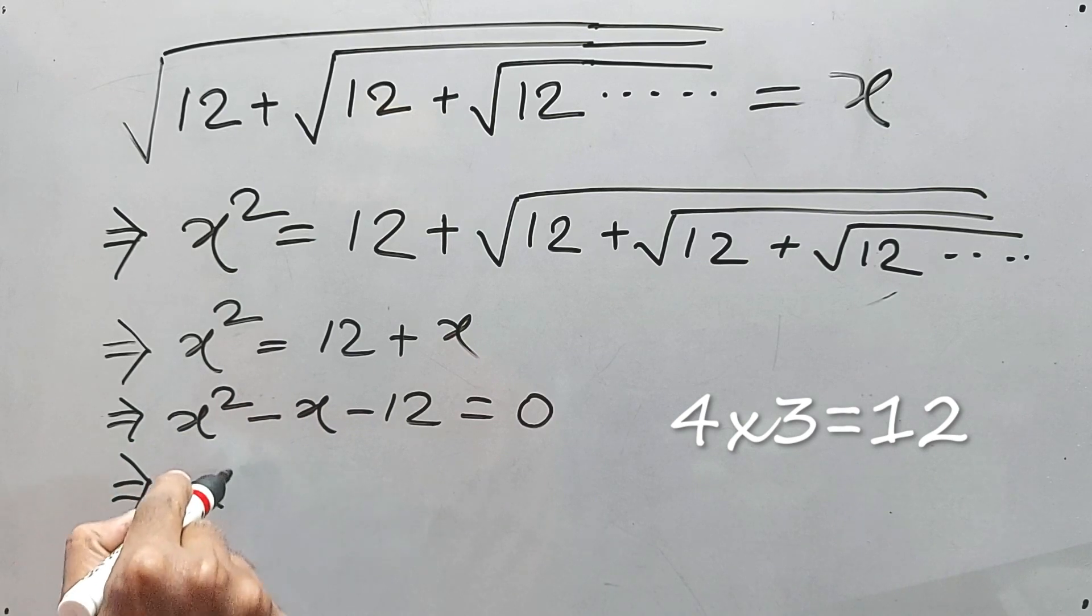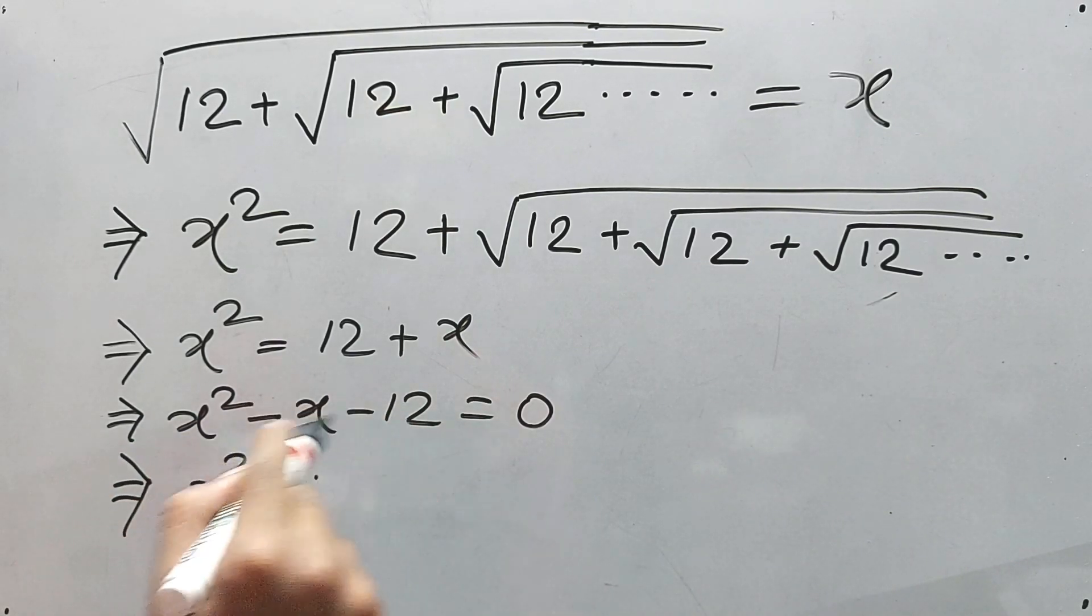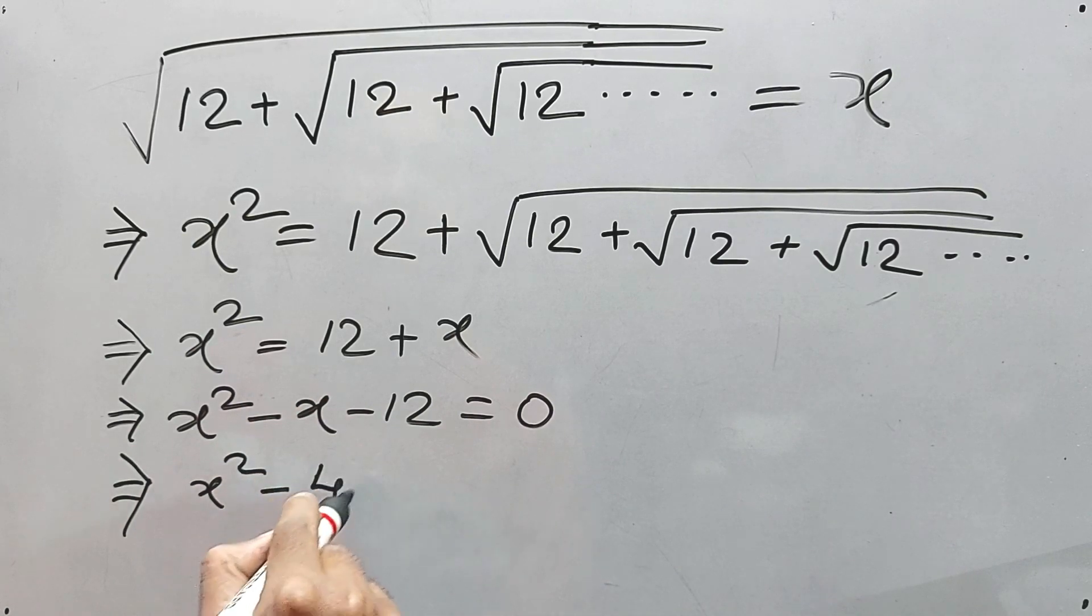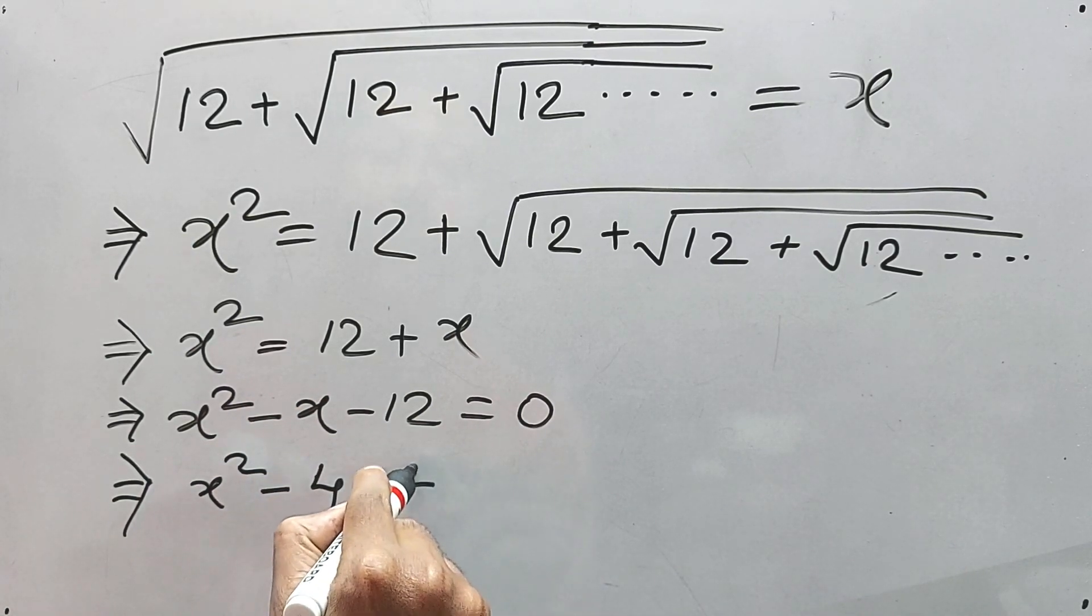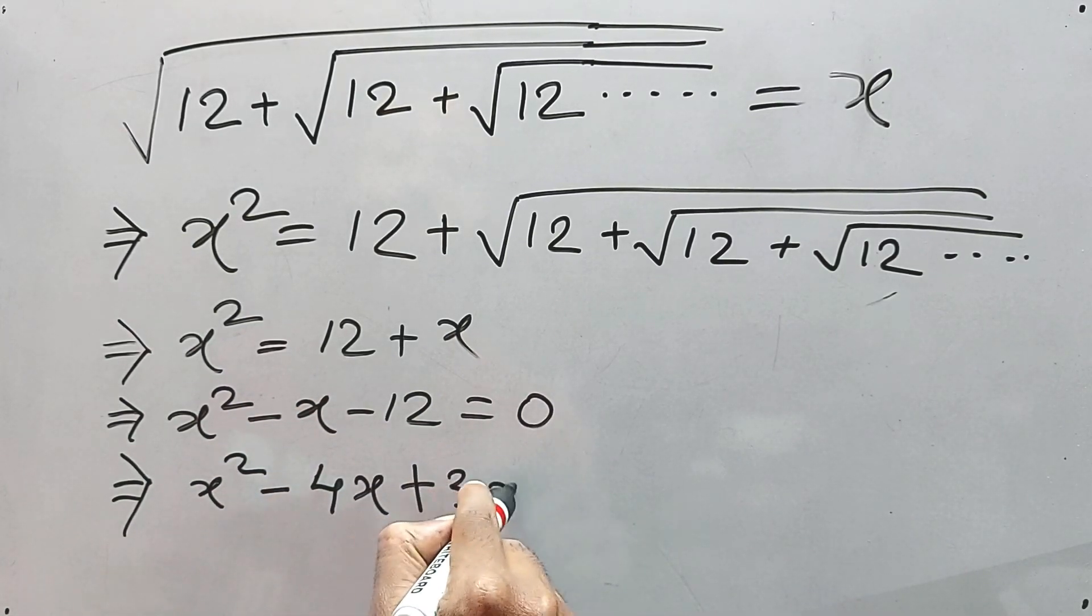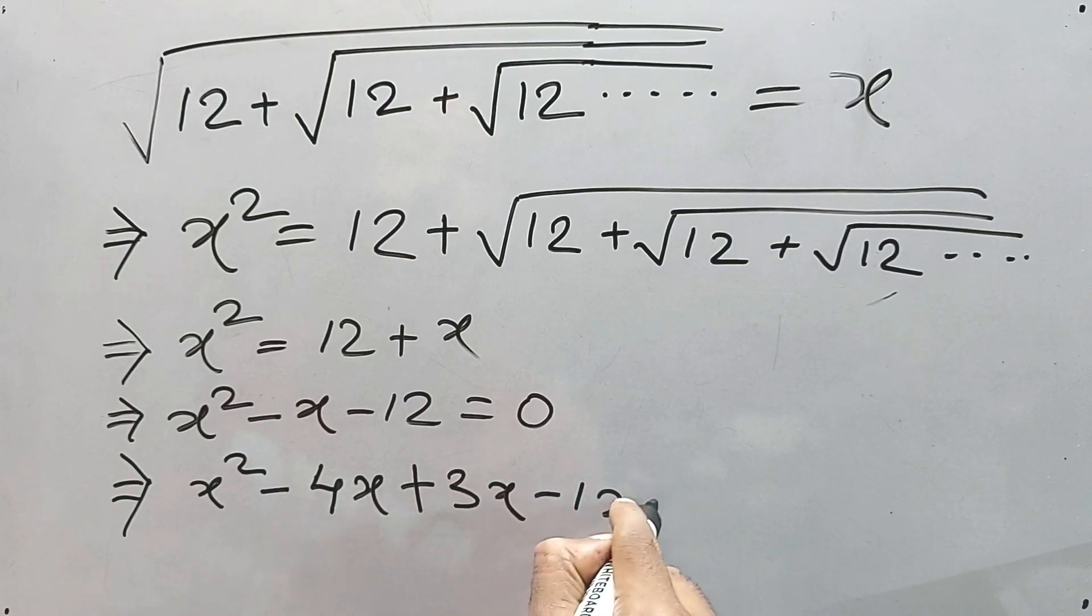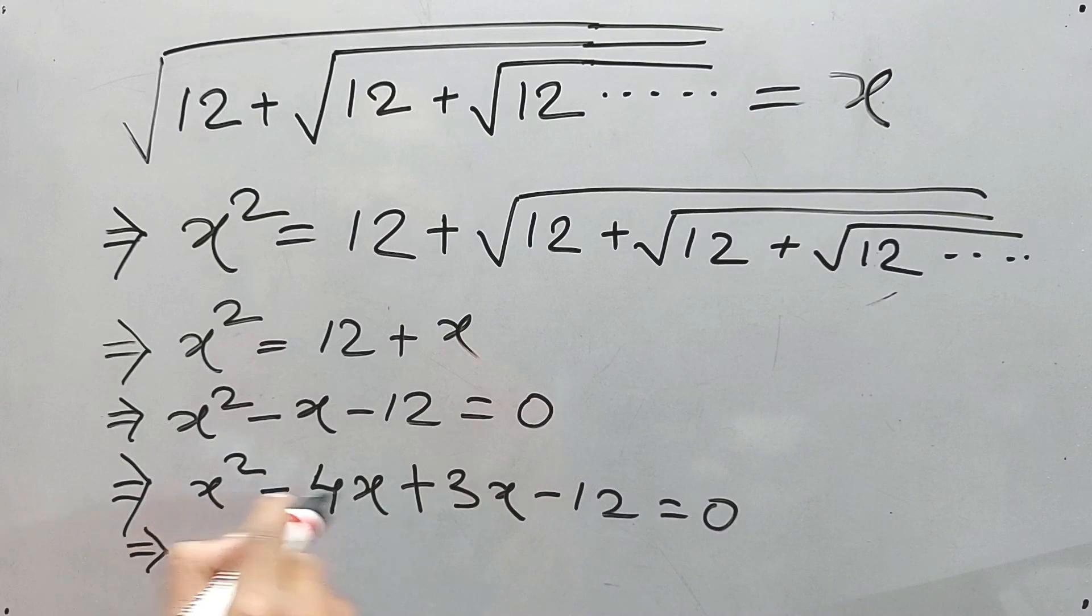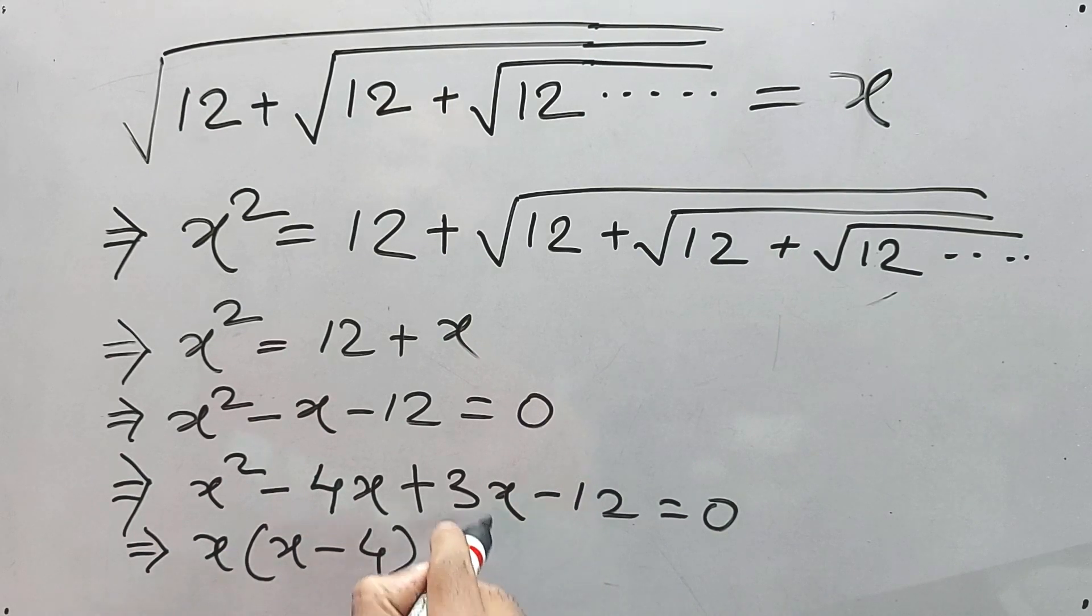So x², 4 times 3 is 12, right? So 4x plus 3x and minus 12 equals 0. And if we take common x minus 4, here also the same thing will happen. We'll take common and x minus 4 equals 0.